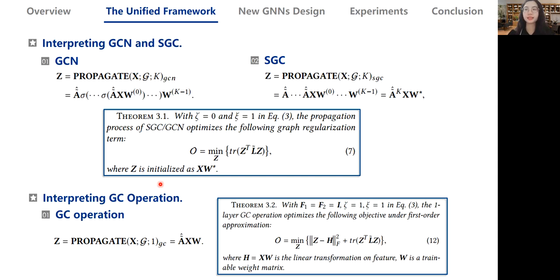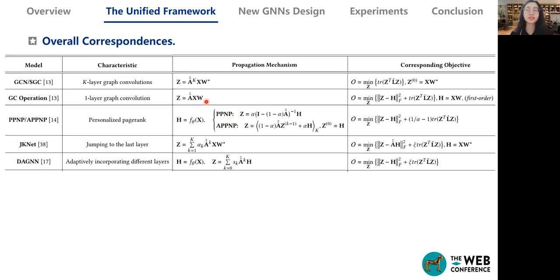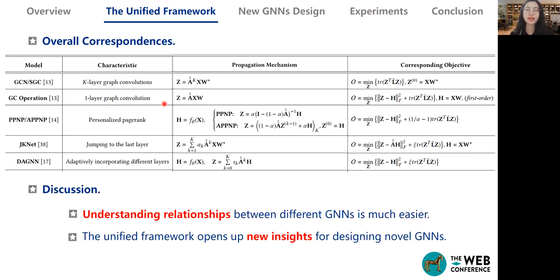We can also prove that the K-layer GCN or SGC has the following objective with just a graph regularization term. The graph convolution operator can also be summarized into our framework under this objective with first-order approximation. Furthermore, we point out that deep graph neural networks like JK-Net and DAGN can also fit into this framework. We assume that attention can be approximated by the learnable coefficient theta. For more details, please find them in our paper. For clarity, we conclude the overall relations between different GNNs and corresponding objective functions in this table.